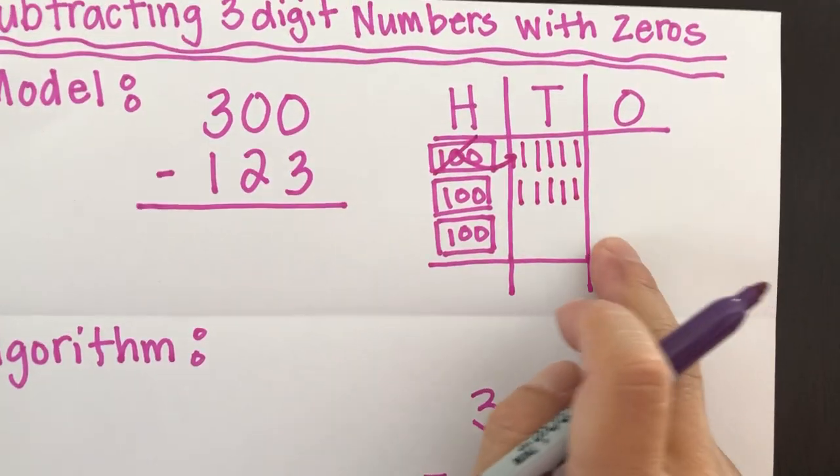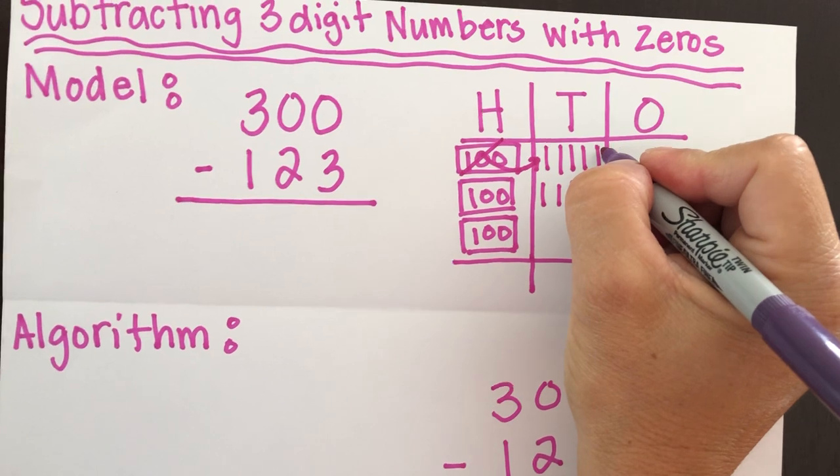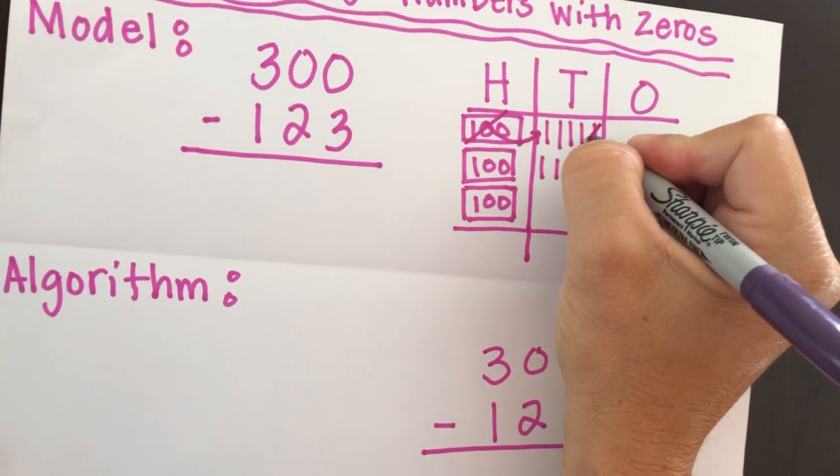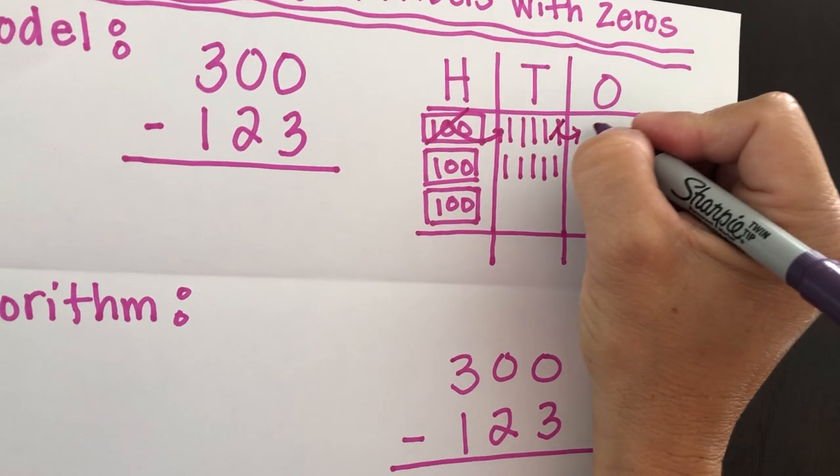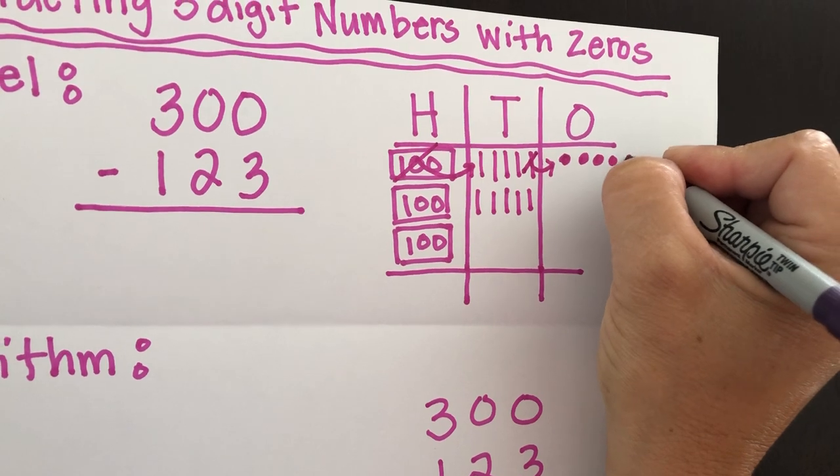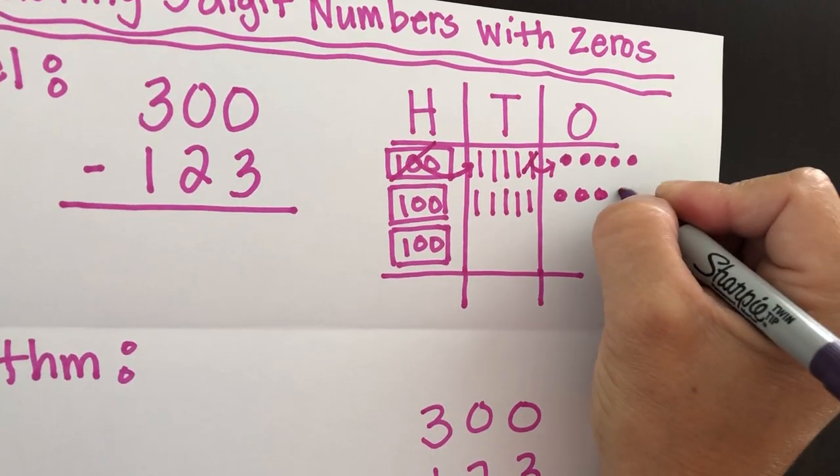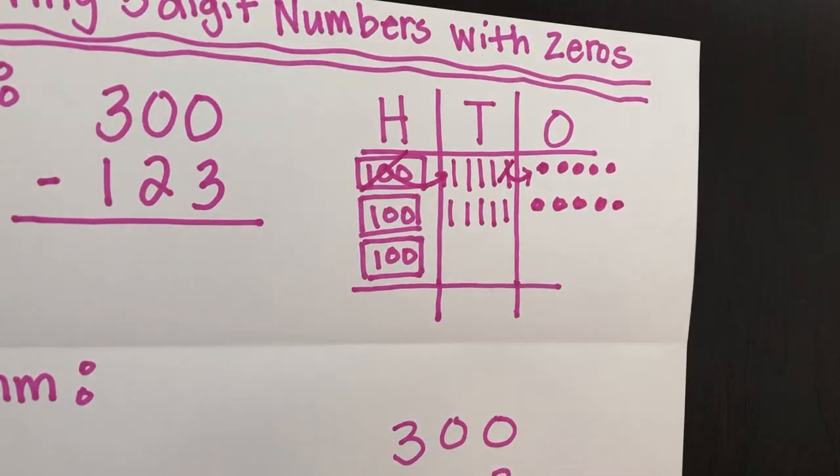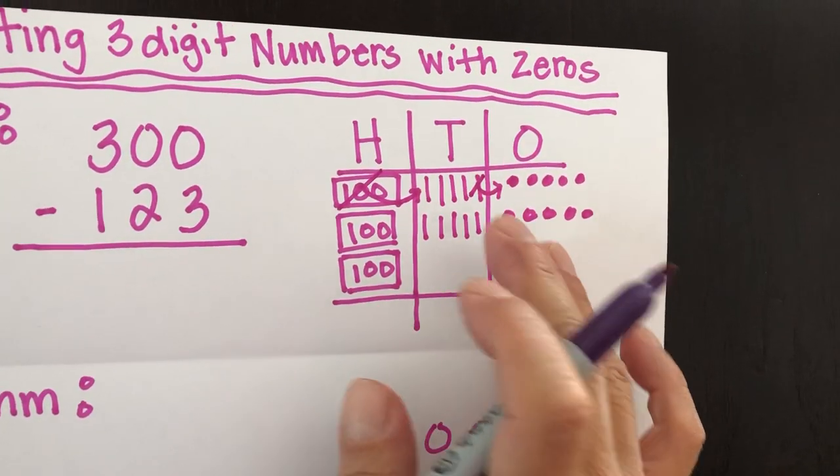But we still have to subtract three from the ones. So that means we're going to have to regroup one of these tens over here and draw it as 10 ones. 1, 2, 3, 4, 5, 6, 7, 8, 9, 10.